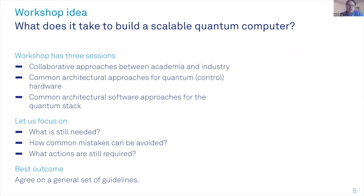We have invited experts from the field who will tell us about the roadmaps they have followed so far — the pitfalls they successfully avoided and maybe fell into — and what other obstacles we should avoid going forward. They should give us their personal view of how the community should develop scalable quantum computers. We should focus our discussions on what is still needed, how to avoid common mistakes, and what actions are still required. A best outcome would be agreeing on a general set of guidelines to focus on in the coming weeks, days, and years.